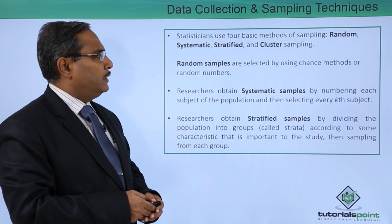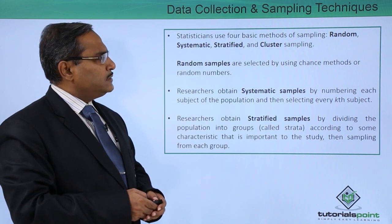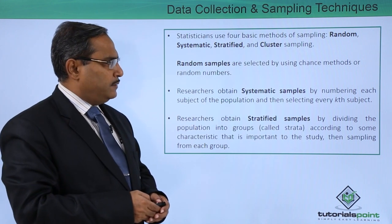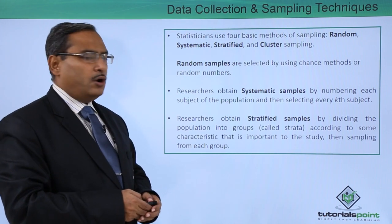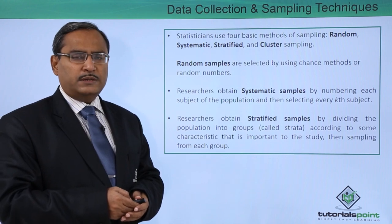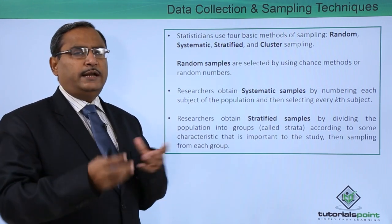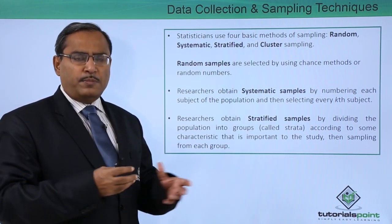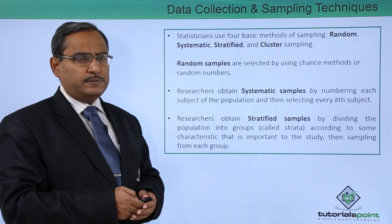First, we go for random samples. Random samples are selected by using chance methods or by using random numbers. From the population, we select a random number of subjects using random sampling.